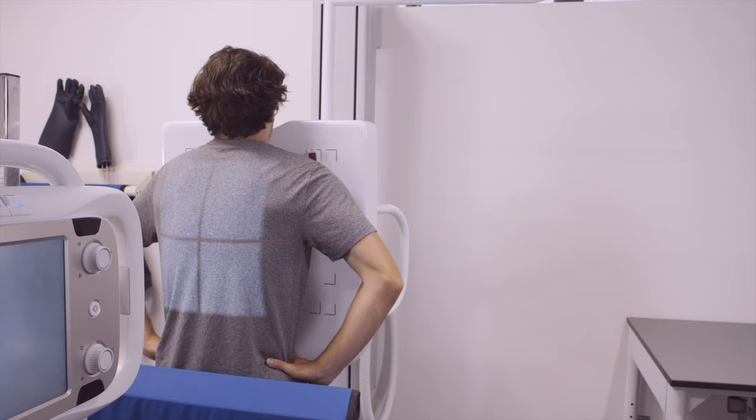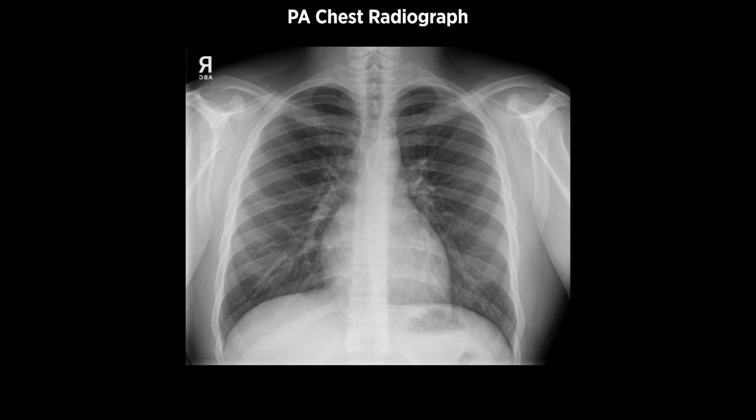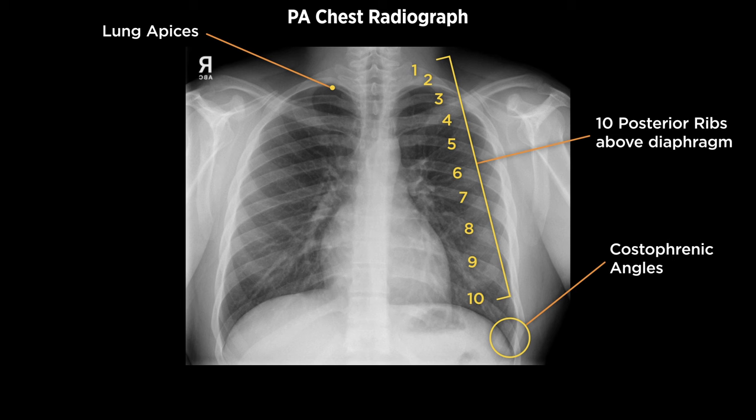A diagnostic PA chest radiograph should be free of motion and rotation, and include both lung apices, both costophrenic angles, and visualization of 10 posterior ribs above the diaphragm.